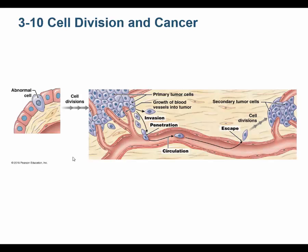Here's a picture of an abnormal cell leading to a primary tumor. If this primary tumor can metastasize, it's malignant. If it can't metastasize and it's encapsulated without great blood flow, then it's benign. This one is malignant because it's metastasizing. A cell breaks away and sets up a secondary tumor, and then that secondary tumor can metastasize and set up another tumor. This is how cancer spreads throughout a person's body.